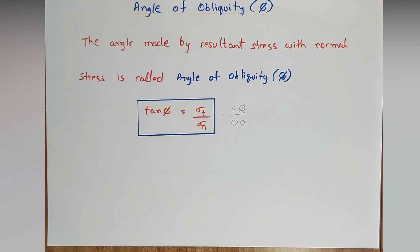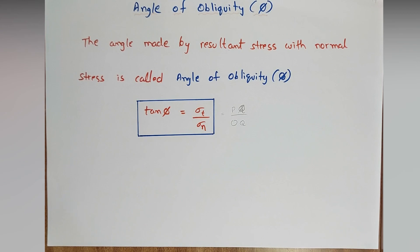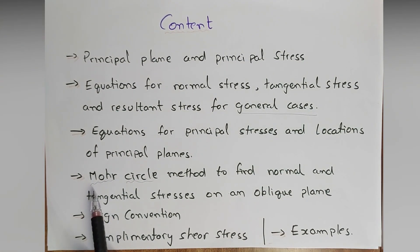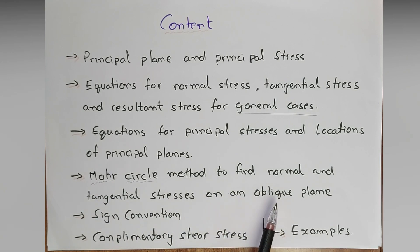So friends, this was the fourth part of the topic Principal Stresses and Principal Planes, where we understood Mohr's Circle method to find normal and tangential stresses on an oblique plane. In the next lecture we will understand sign conventions and complementary shear stresses. That is all for today — thank you for watching.